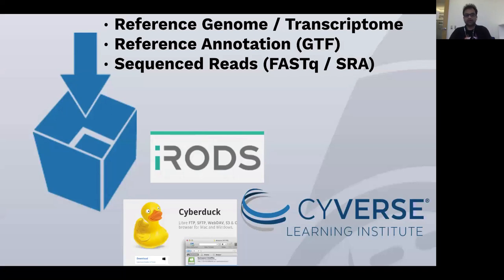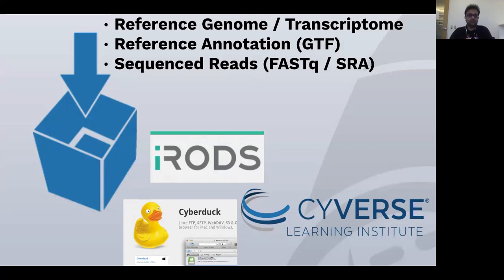For the first part — getting data — if you're performing mapping to a genome, you will require the reference genome or transcriptome for that particular species, a reference annotation file, and sequence reads, which could either be FASTQ files from your sequencing facility or publicly deposited SRA files which can be downloaded and processed. There are a couple of ways of transferring data to the Cyverse data store, including a command line client offered by iRODS, and a graphical user interface by Cyberduck where you can drag and drop files. For more details, please look at Cyverse Learning Institute's wiki page.